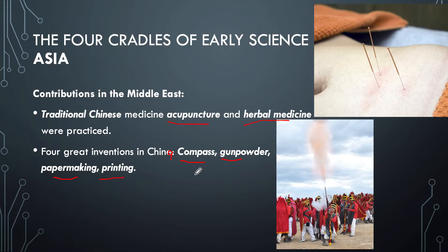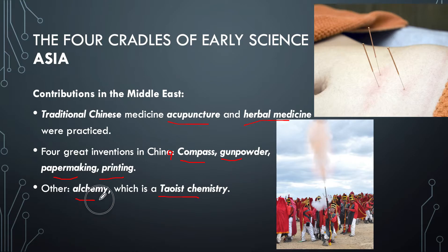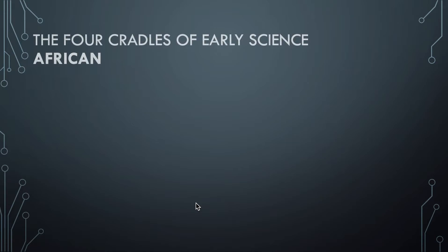There are also other contributions, including Taoist chemistry — they call it alchemy. So those are some of the early sciences of Asia.